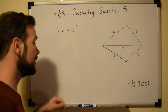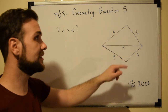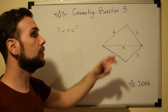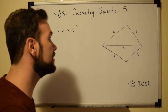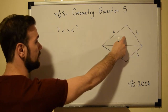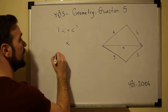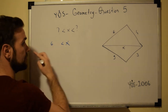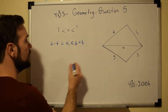Welcome to question number five. In this question we have two triangles which share the same side, X, and we are asked to find the value of X. The rule is: one side of a triangle is always greater than the subtraction of the other two sides and less than their addition. For the upper triangle, X is between 2 and 10.